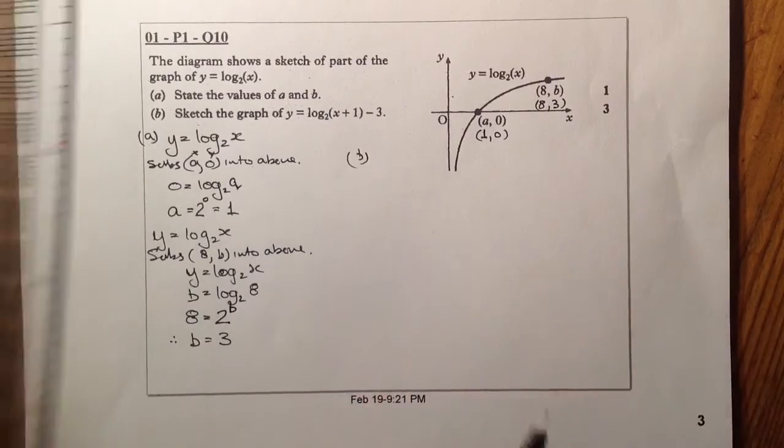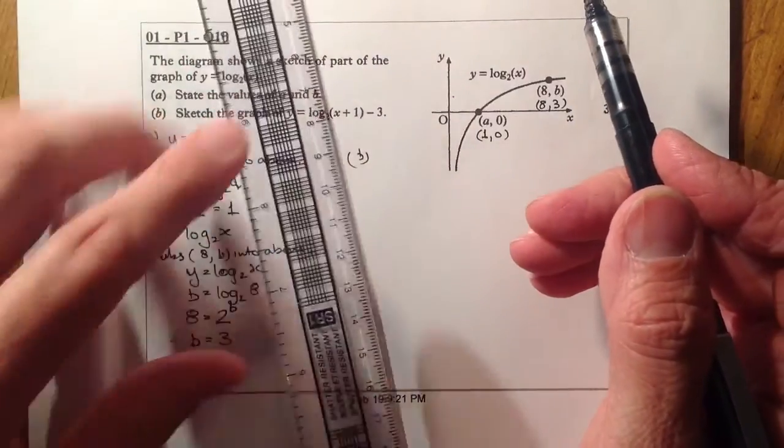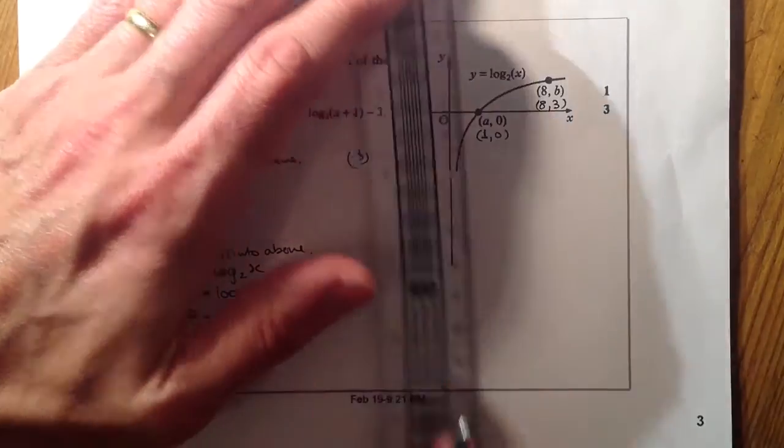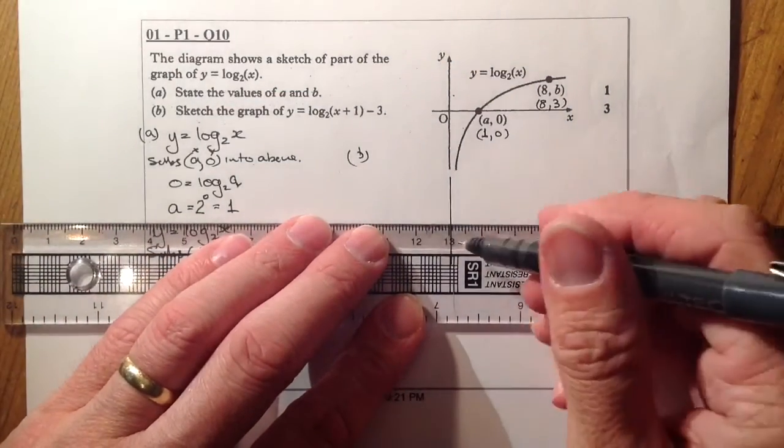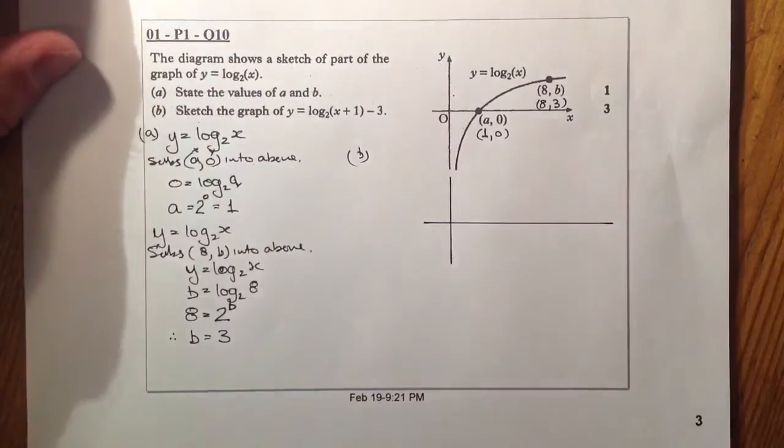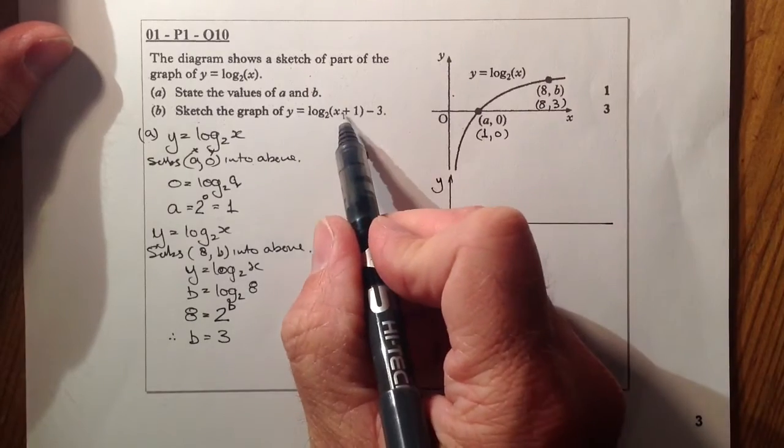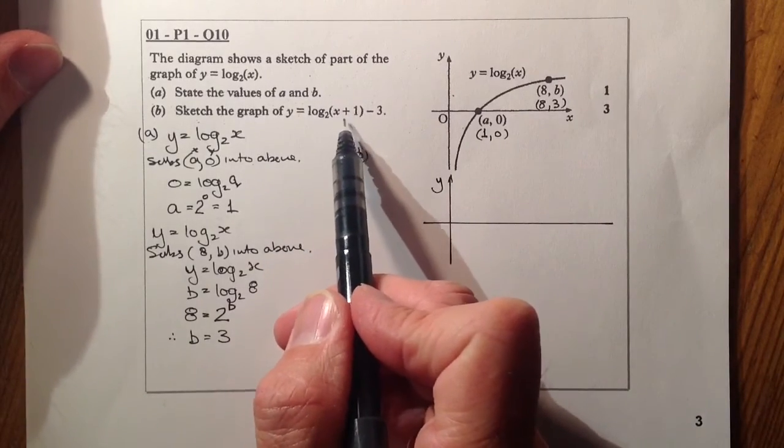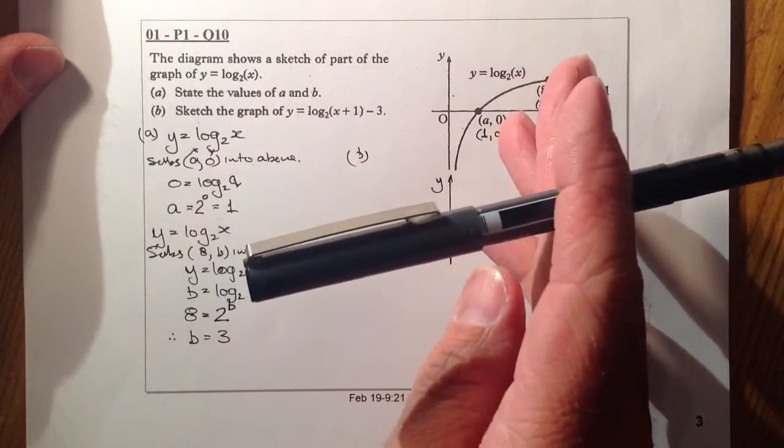What I'll be doing now is I'll be looking to sketch this graph. I'll do two translations. I'll do one that will be translating in the horizontal direction first of all. Remember what we've got here is x plus 1. Whenever we've got something in the bracket there, you would think a plus 1 would move in that direction. It doesn't.